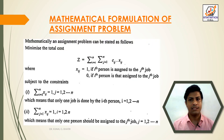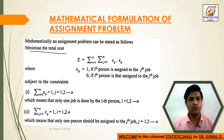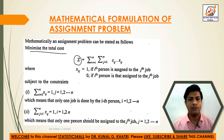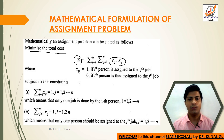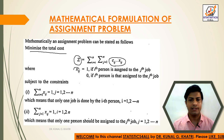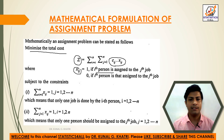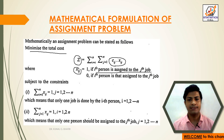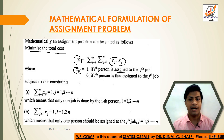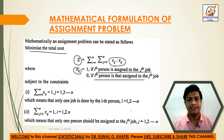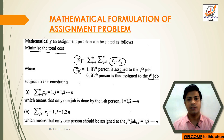Now, the mathematical formulation of the assignment problem. Mathematically, an assignment problem can be stated as follows: minimize the total cost Z = Σ(i=1 to n) Σ(j=1 to n) Cij · Xij, where Xij = 1 if the ith person is assigned to the jth job, and Xij = 0 if the ith person is not assigned to the jth job.